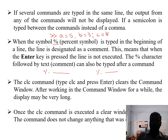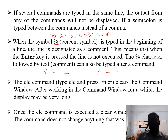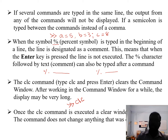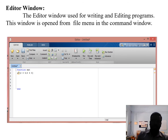The CLC command clears the Command Window. After working in the Command Window for a while, the display may become very large. If you only want to see the current result, you type CLC at the command prompt and press Enter — all old results are cleared and only current results remain.